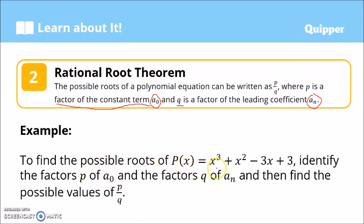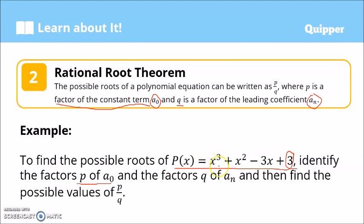To find the possible roots of p of x equals x cubed plus x squared minus 3x plus 3, let's identify the factors of the constant term. The constant term is 3, so the factors of 3 are positive 1, negative 1, positive 3, and negative 3. For the leading coefficient: the leading term is x cubed, so the leading coefficient is 1. The factors of 1 are positive 1 and negative 1.